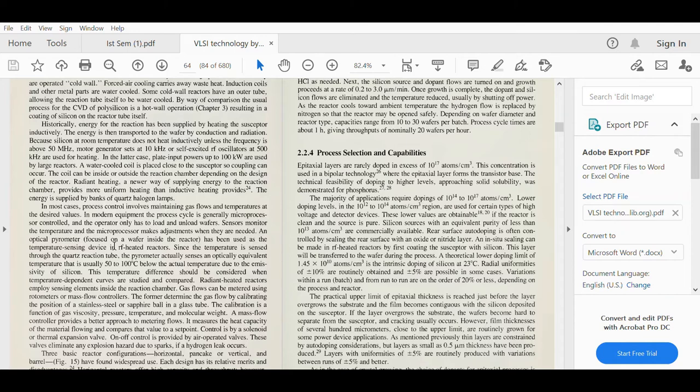Sensors monitor the temperature and the microprocessor makes adjustments when needed. An optical pyrometer has been used as the temperature sensing device in infrared sensor. Since the temperature is sensed through the quartz reaction tube, the pyrometer actually senses an optical equivalent temperature that is usually 50 to 200 degrees below the actual temperature due to the emissivity of silicon. This temperature difference should be considered when temperature-dependent curves are studied and compared. Radiant heated reactors employ sensing elements inside the reaction chamber.